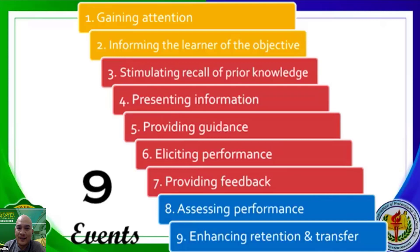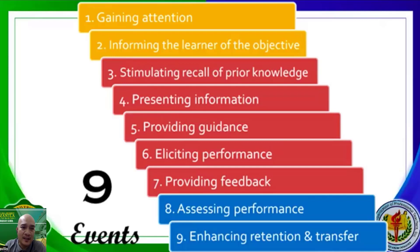Number seven is provide feedback. Offer immediate feedback on students' tasks that is personalized, constructive, and positive. Tell students whether they are complying with the guidance or not. Appraise students' work, especially if the quality is good. Give praise, give remedial, and guide students to find the correct answer. Peer evaluation, feedback, and self-evaluation are all forms of feedback.